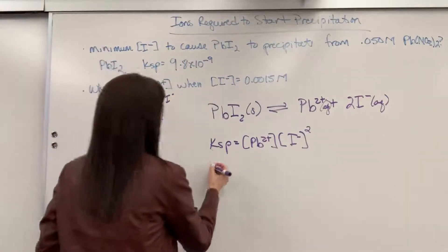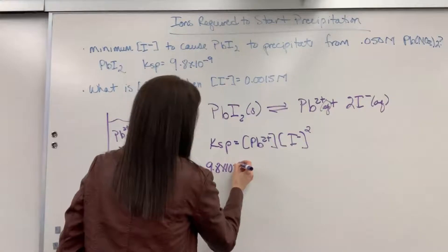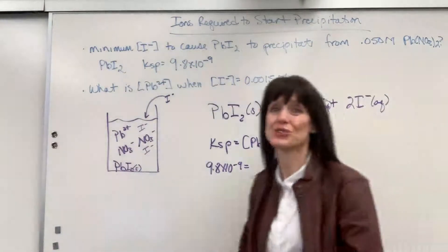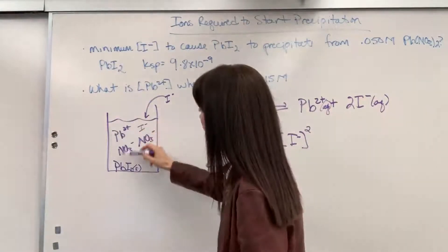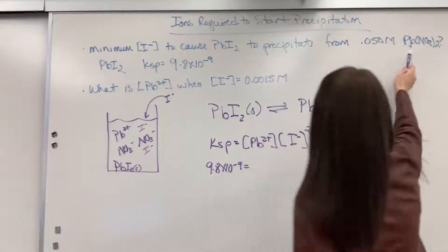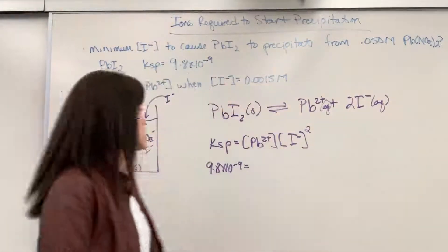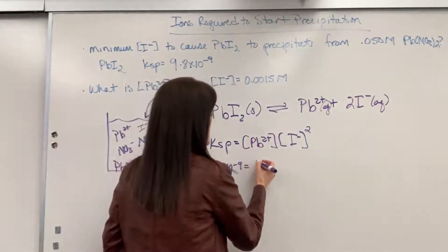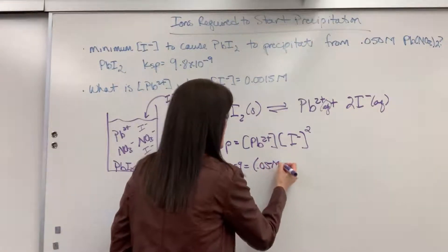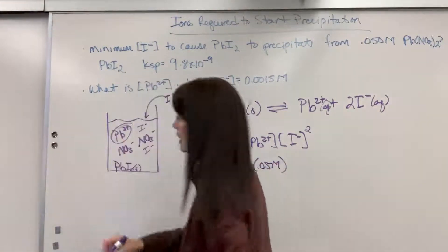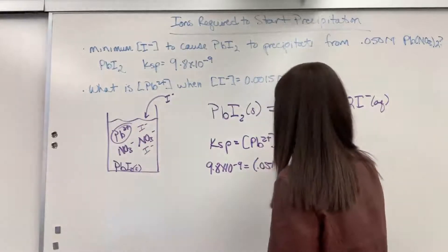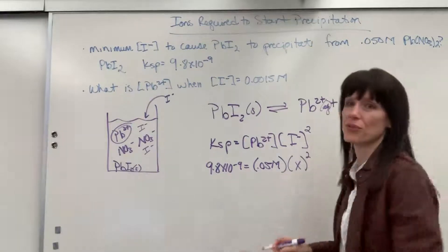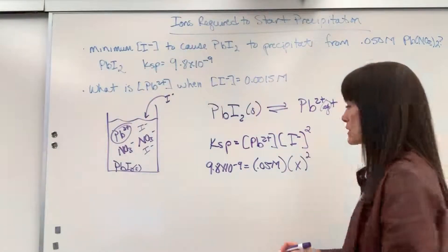Let's plug in what we do have. So we are going to have a KSP of 9.8 times 10 to the minus 9 equals, well, guess what? I got the concentration of the lead. I know how many lead ions are in here. I know that concentration of that lead is from right there, that lead nitrate. We're starting with lead nitrate in here. So I'm going to go ahead and put that concentration in. The lead 2+ is 0.05 molar. That's the concentration of that lead right there. So the question is, well, what's the concentration of iodide for this to reach perfect equilibrium?